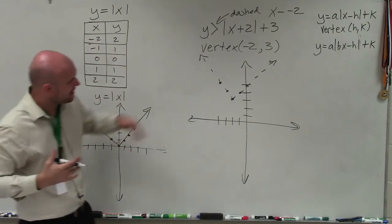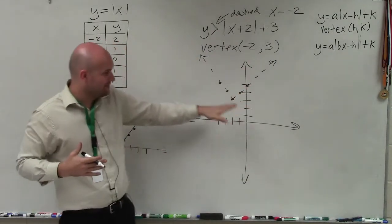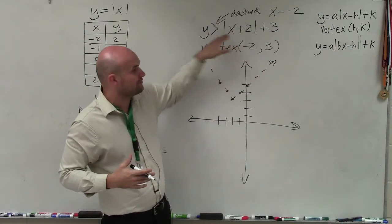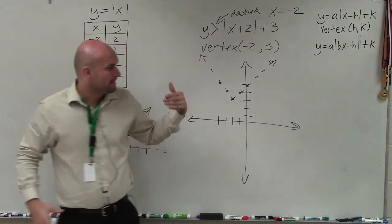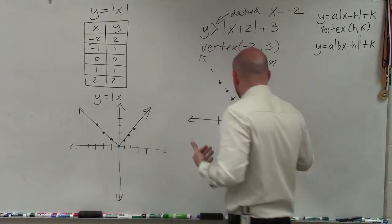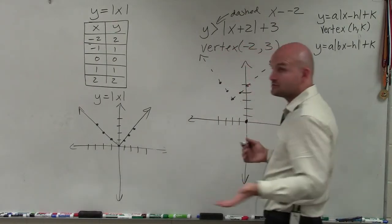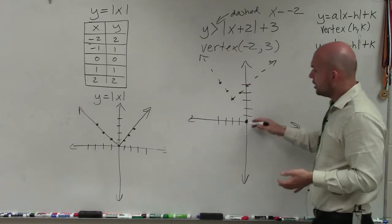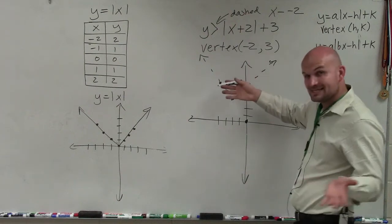The last thing I want to do is determine which region is the solution. The graph is not part of the solution. Any point on this equation, when I plug in for x and y, is going to be false. But what about the points outside of my inequality equation? Are those going to be true or false? Or the ones inside, will those be true or false?